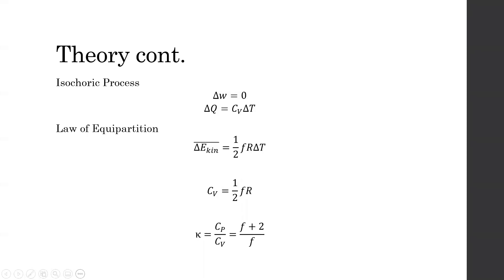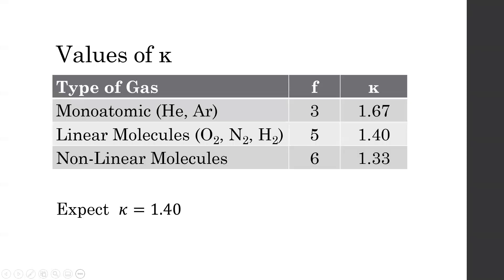We can now use this to relate kappa to the number of degrees of freedom of a gas. Through thermal physics, we know that different types of gases have different numbers of degrees of freedom, leading to different kappa values. These kappa values are 1.67 for monoatomic gases, 1.4 for linear molecules, and 1.33 for non-linear molecules. Since air is mostly linear molecules, we expect it to have a kappa value of 1.4.